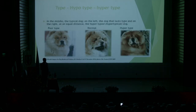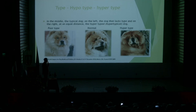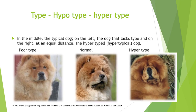For example, you have here in the middle the typical dog. On the left, the dog that lacks type, and on the right, at an equal distance from the one in the middle, you have the hyper-type or hyper-typical dog. So it's an illustration of what we call hyper-type.